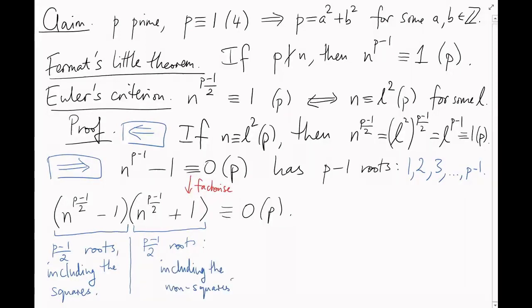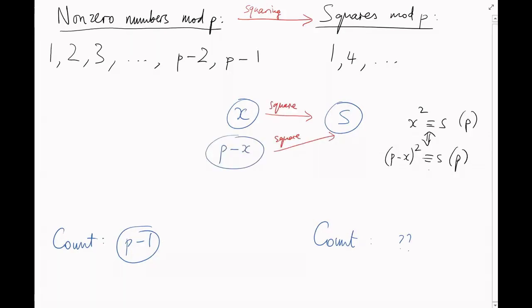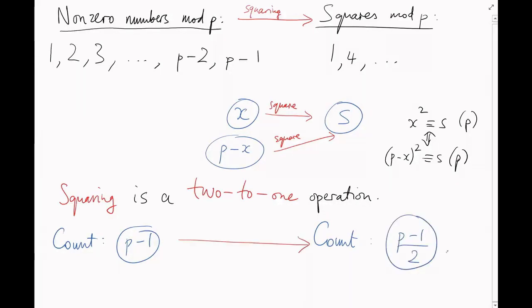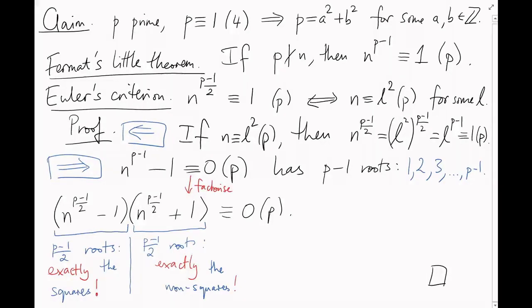So, out of the numbers 1, 2, and so on, up to p-1, how many are squares? Well, just like over the real numbers, every non-zero square has exactly two square roots. If x squared equals, say, s mod p, then (p-x) squared equals s mod p too. So squaring is a two-to-one operation. There are p-1 numbers on the left, so there must be (p-1)/2 squares here on the right. They must all be roots of the first polynomial, which can only have (p-1)/2 roots, and so all the non-squares are forced to be roots of the second polynomial. That's the other half, and that finishes our proof.